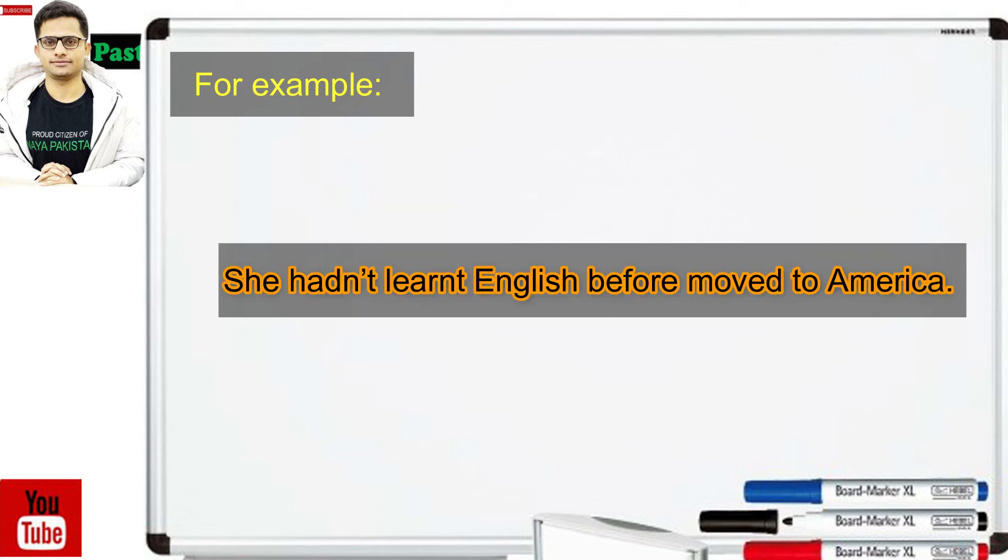Second example: she hadn't learnt English before move to America. وہ امریکہ جانے سے پہلے انگریزی نہیں سیکھ چکی تھی. اس کا مطلب ہے جب وہ امریکہ گئی past simple tense ہے اس سے پہلے وہ انگریزی نہیں سیکھ چکی تھی یہ past perfect tense ہے.